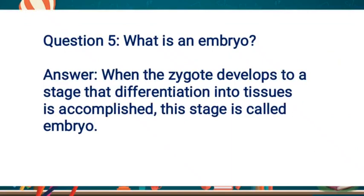Question number 5: What is an embryo? Embryo kya hai? Pehle fusion hua, toh zygote bana. Jab zygote develop hota hai, use embryo bolte hain. Answer: When the zygote develops to a stage where differentiation into tissues is accomplished, this stage is called embryo. Matlab jab tissue ki stage mein body structure banna shuru ho jaati hai, use embryo bolte hain.